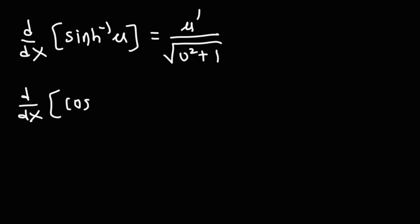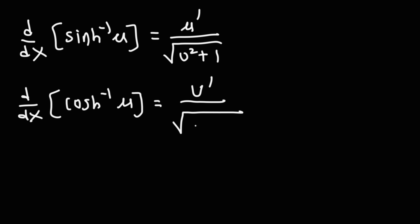We have the derivative of the inverse hyperbolic cosine function of u, and this is equal to u prime over the square root of u squared minus 1, as opposed to plus 1.